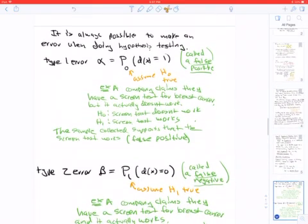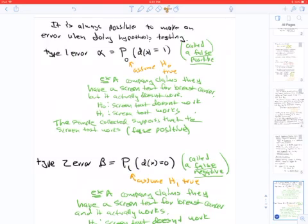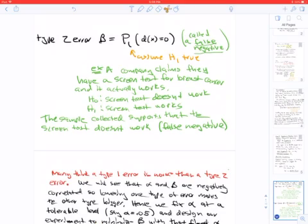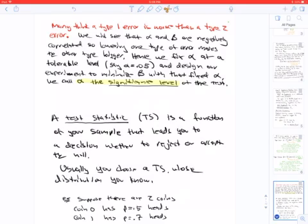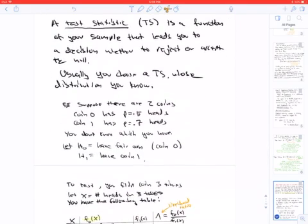We have two types of errors: alpha is called a false positive, where assuming that the null is true, we reject the null. Alternatively, beta or type 2 error is when, assuming that the alternative is true, we accept the null. Many think that a type 1 error is worse than a type 2 error. These are anti-correlated errors, so making one better makes the other worse. Our strategy is to fix alpha to a tolerable level, let's say 0.05, and then design our experiment to minimize beta. Later we'll call minimizing beta maximizing the power of the experiment. Alpha is called the significance level of the test.